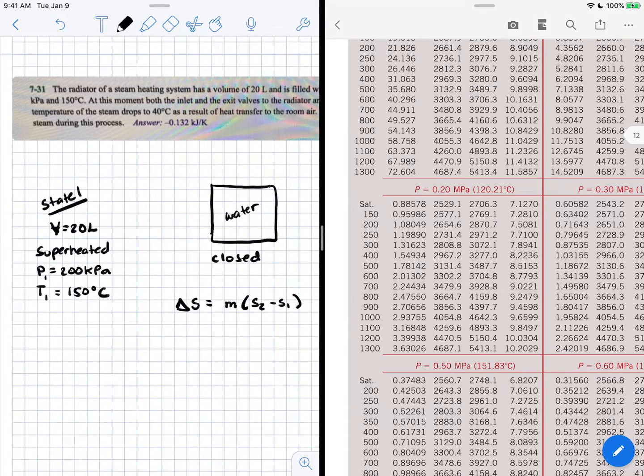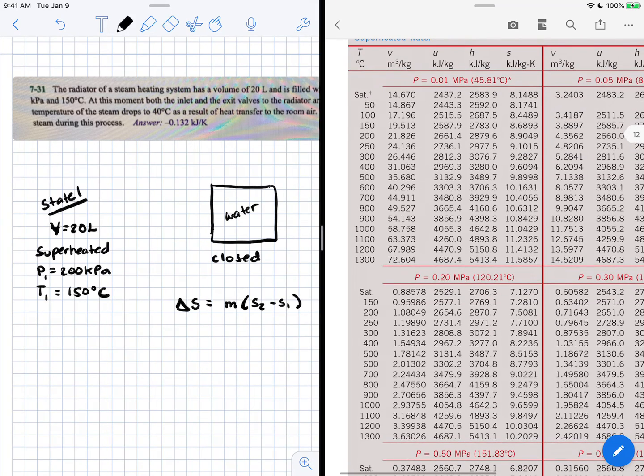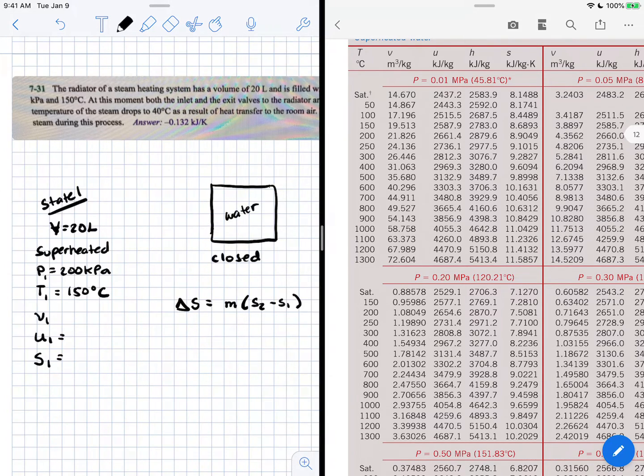I'm going to write down all the properties of this superheated steam at these conditions. Since it's a closed system, I'll record the specific volume, internal energy, and entropy at state 1. At 150 Celsius, the specific volume is 0.95986 m³/kg, internal energy at state 1 is 2577.1 kJ/kg, and entropy is 7.281 kJ/kg·K.